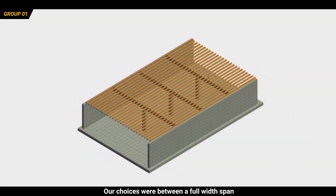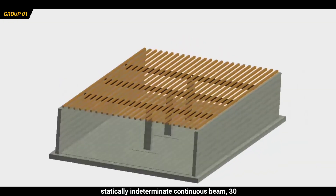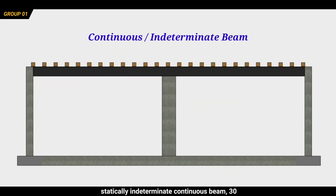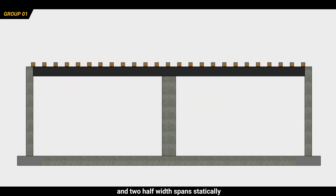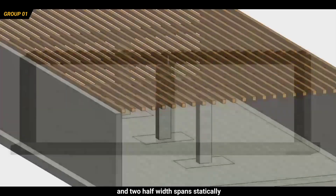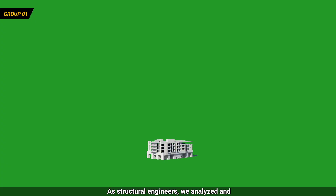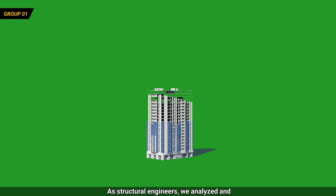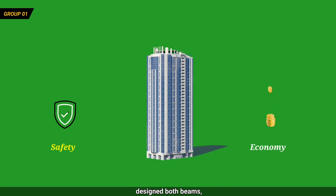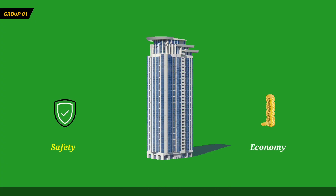Our choices were between a full-width span statically indeterminate continuous beam of 30 feet, and two half-width span statically determinate beams of 15 feet each. As structural engineers, we analyzed and designed both beams, ensuring safety and economy.